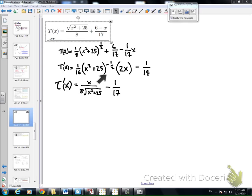And then I also took 2x and divided it by 1/16. So if I had 2x over 1/16, that would be x over 8. So the square root part comes from up here, and the x over 8 comes from the 1/16, and the 2x minus 1/17.